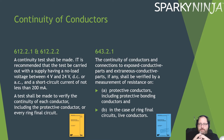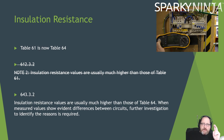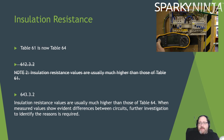They've taken the 4 volts, 24 volts, 200 milliamp specification out, which is annoying because that might have to disappear from exams. Table 61 is now Table 64 — that's fine, it's the first table in Chapter 64. The old regulation had a Note 2 to 61232 saying the insulation resistance values are usually much higher. That's now been introduced into the regulations proper, not just in a note. It says the values are usually much higher than those of Table 64, and if they show evident differences between circuits, further investigation to identify the reasons is required.